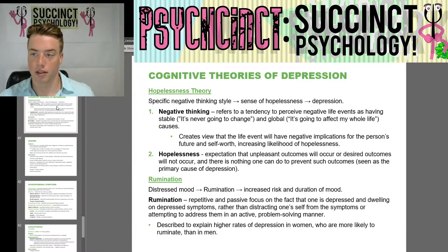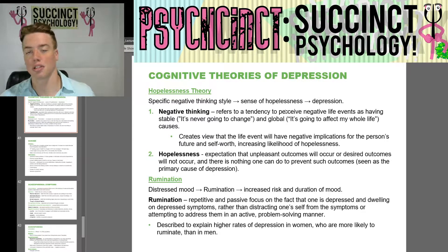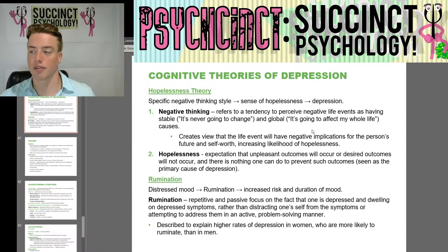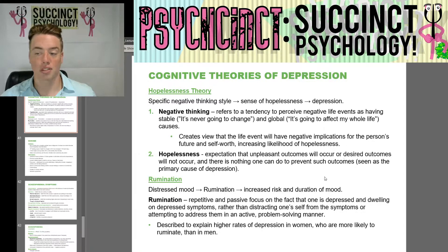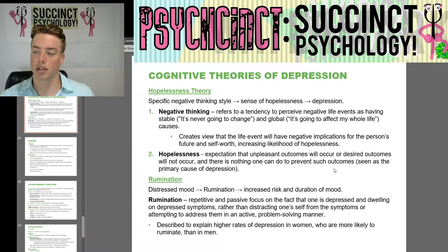We have the hopelessness theory, which is that a specific negative thinking style leads to a sense of hopelessness, which leads to depression. Negative thinking refers to a tendency to perceive negative life events as having stable — meaning it's never going to change — and global — meaning it's going to affect my whole life — causes. It creates a view that the life event will have negative implications for the person's future and self-worth, increasing the likelihood of hopelessness, which is the expectation that unpleasant outcomes will occur or desired outcomes will not occur, and there is nothing one can do to prevent such outcomes, seen as the primary cause of depression.